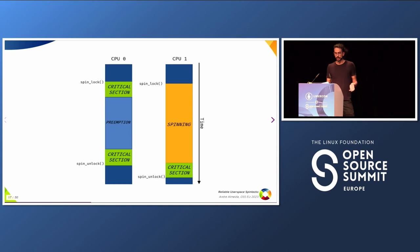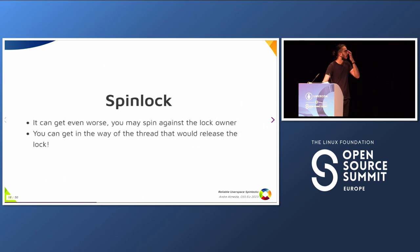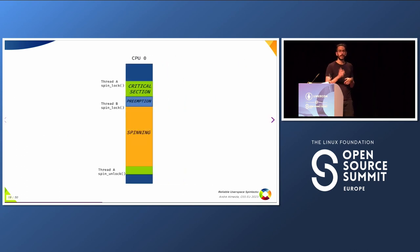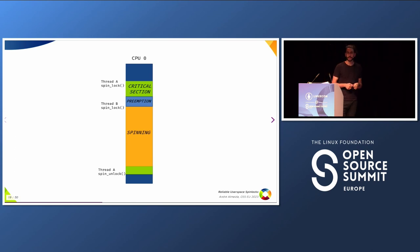You need the task scheduler to schedule the thread again to give it the time slice, so it can finish the job and unlock the spin lock. And there is even a worse scenario: you may be spinning against the lock owner. Let's say we have thread A and thread B, both working on CPU 0. Thread A gets the lock, and thread B is preempted on the same CPU and starts spinning. But you're spinning for something that is not on any CPU, not going to be released — you're just wasting CPU cycles and blocking thread A.